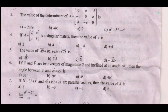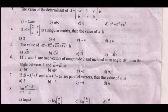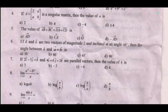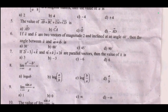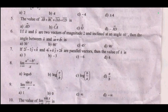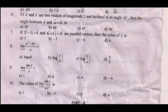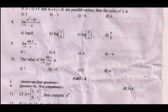Fifth one: the value of ab plus bc plus da plus cd is dash. Sixth one: if vector a and vector b are two vectors of magnitude 2 and inclined at an angle of 60°, then the angle between a and (a plus b) is dash. Seventh one: if 2i minus 3j plus k and 4i plus kj plus 2k are parallel vectors, then the value of k is dash.